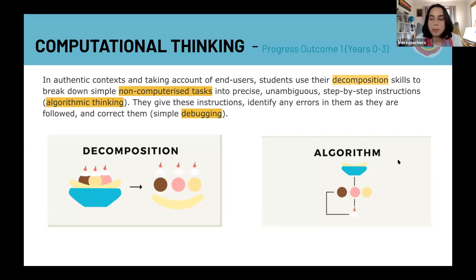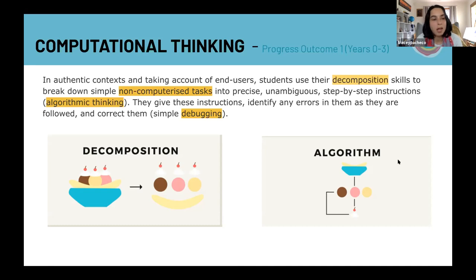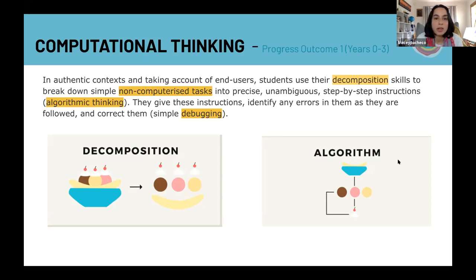For example, when we're talking about how to make a peanut butter sandwich, students can break that down into step-by-step instructions so someone else can follow them to make that sandwich. They give those instructions to someone - which is the end user. While that person is making the sandwich, they have to identify any errors in the way the instructions were stepped out. Those errors are called bugs, and correcting them is called debugging.